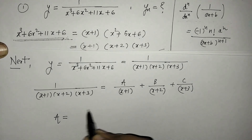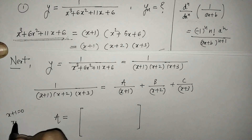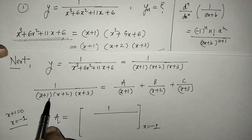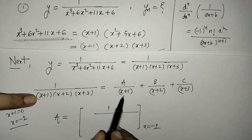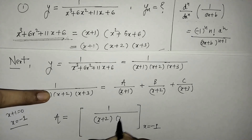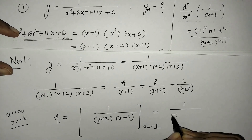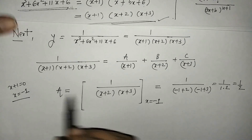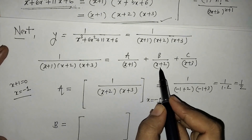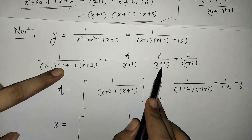For finding a, we put x + 1 = 0, that means x = -1, on the right side by avoiding the first factor in the denominator of a. So for finding a we write 1/[(x+2)(x+3)] and put x = -1. On simplification we get a = 1/2. Now we find the value of b by putting x = -2, avoiding the factor in the denominator of b, giving us 1/[(x+1)(x+3)].